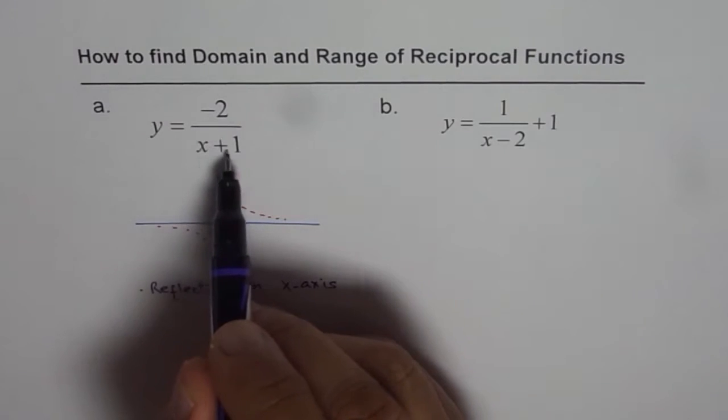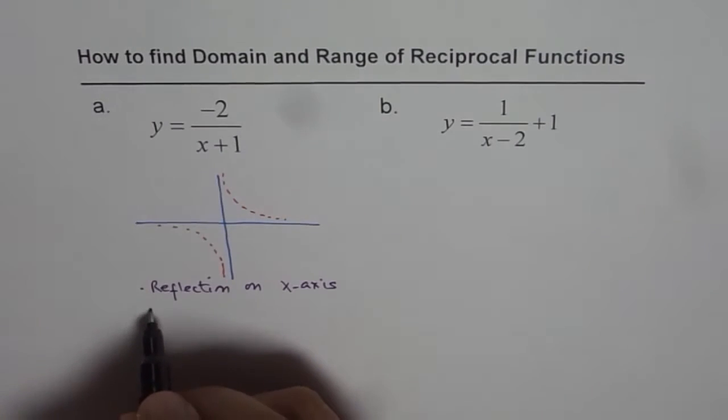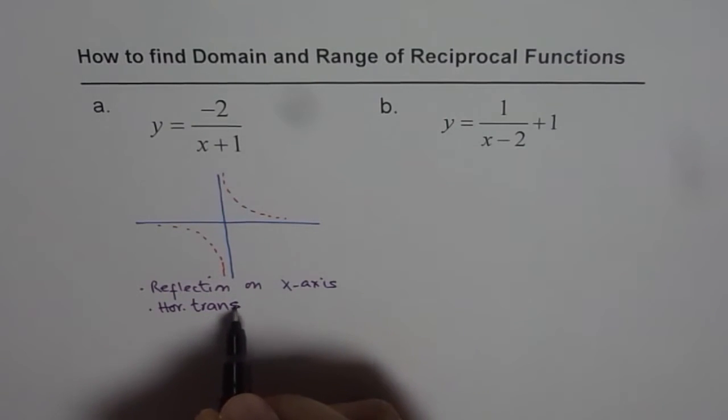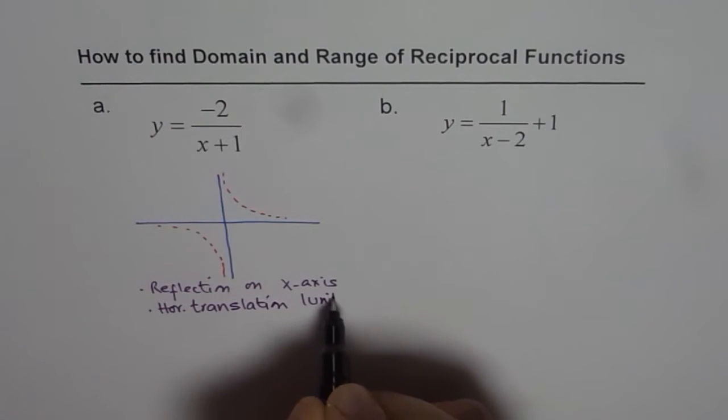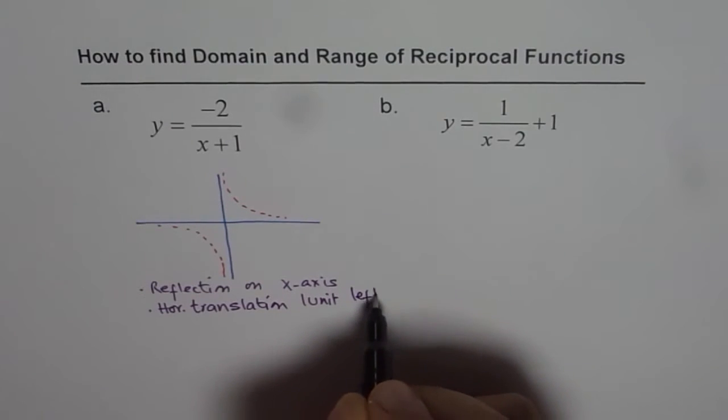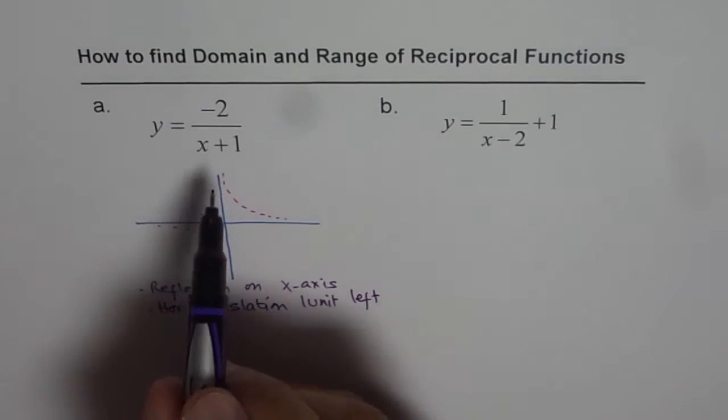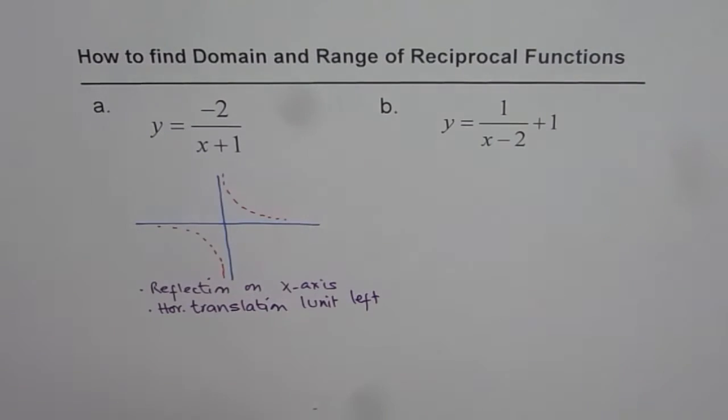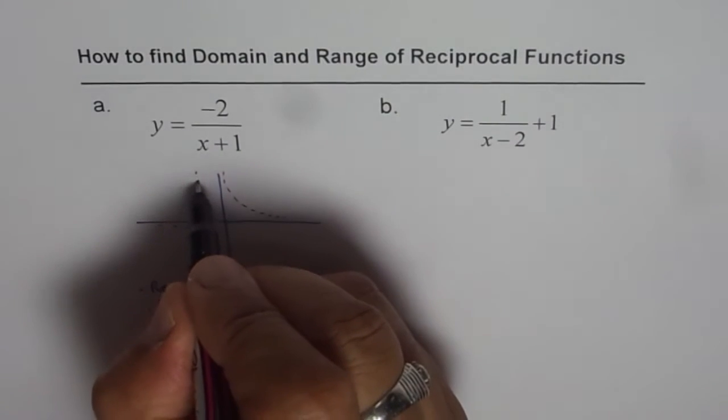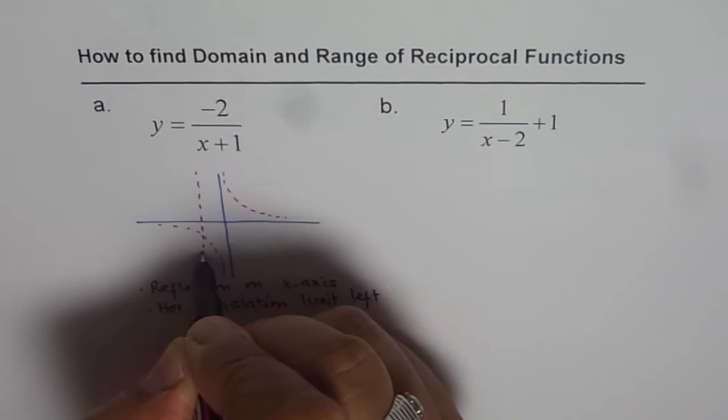And x plus 1 means that there is a horizontal translation. So that means x equals minus 1 will give us a vertical asymptote. So we can draw a vertical asymptote here, saying this is x equals minus 1.